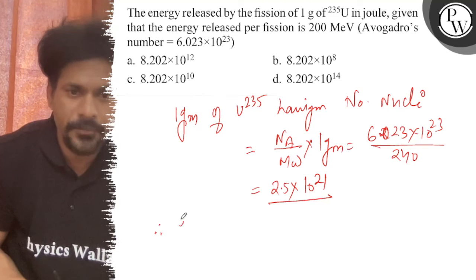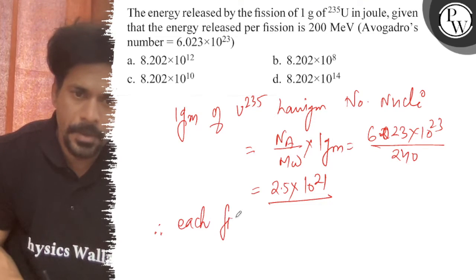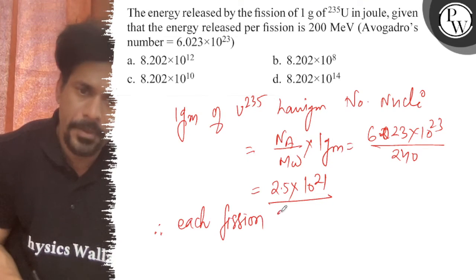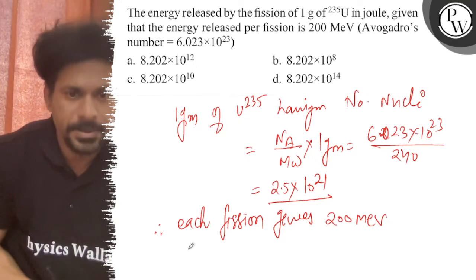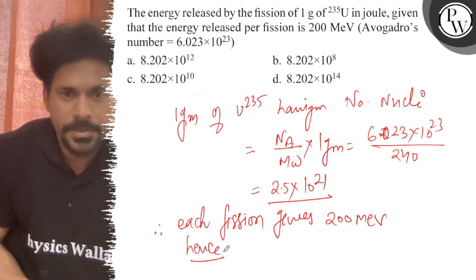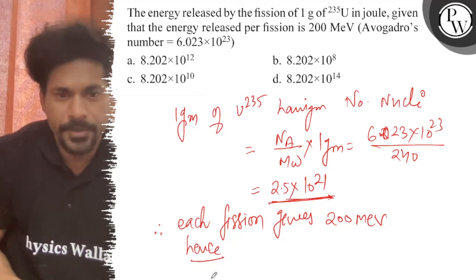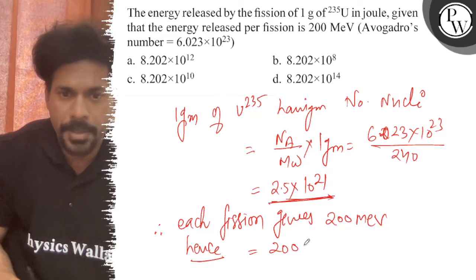Because each fission gives 200 mega electron volt energy, hence this number of fissions will give total energy equal to 200 × 10^6 × 1.6 × 10^-19 and...